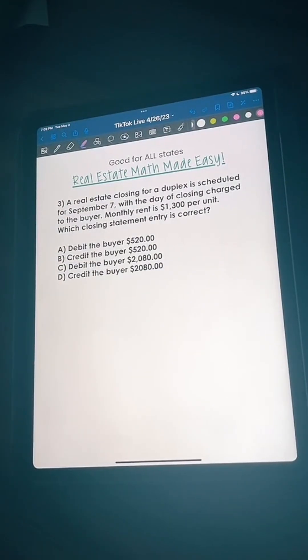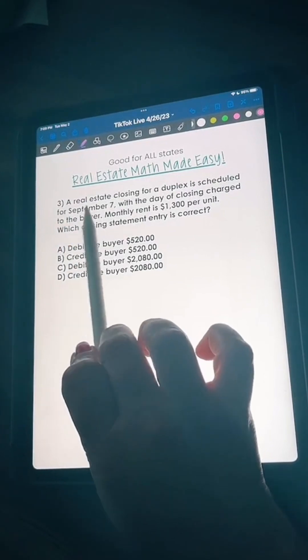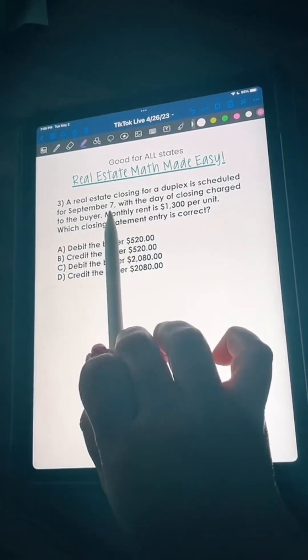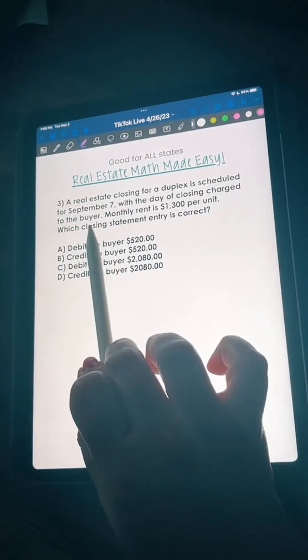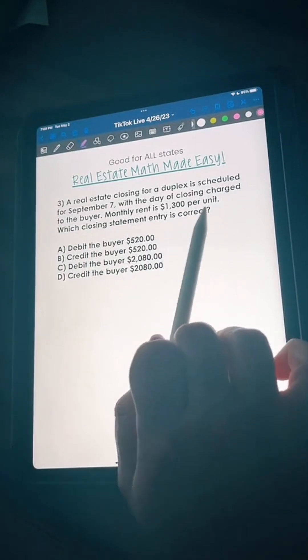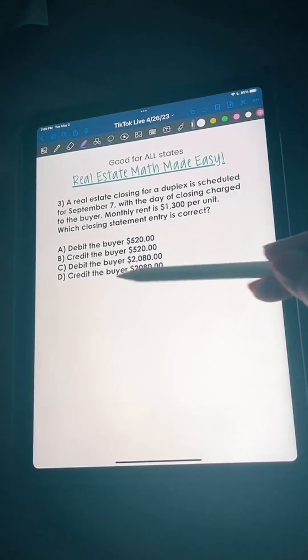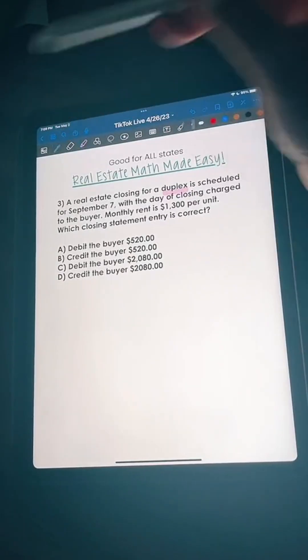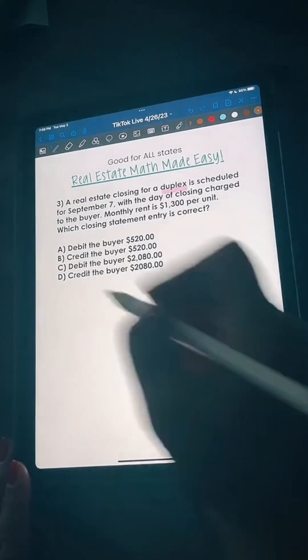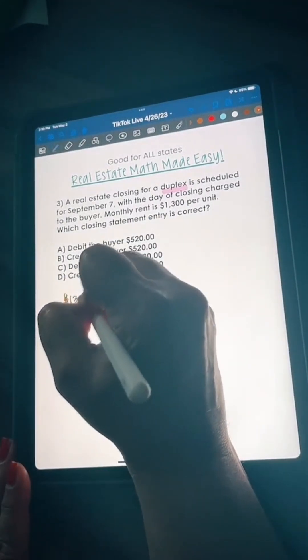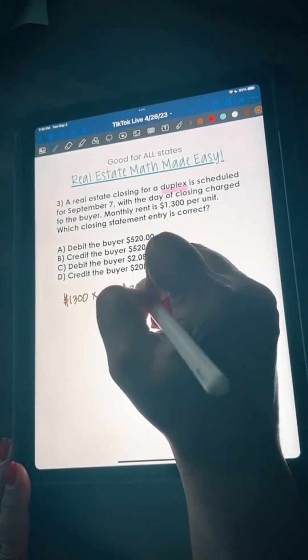Here we go, this is a proration problem. A lot of people have a lot of questions regarding these. A real estate closing for a duplex is scheduled for September 7th with the day of closing charged to the buyer. Monthly rent is 1300 per unit. Which closing statement entry is correct? We already see that it's a duplex, means there's two units. We got to find out the monthly rent for the two units, so 1300 times two gives us a total monthly rent of 2600.